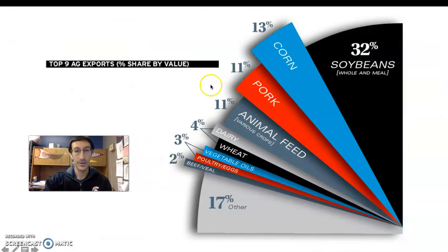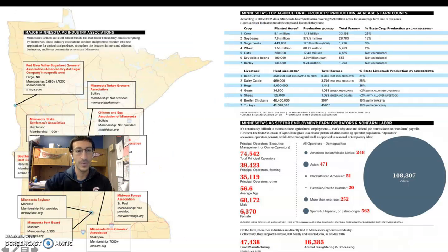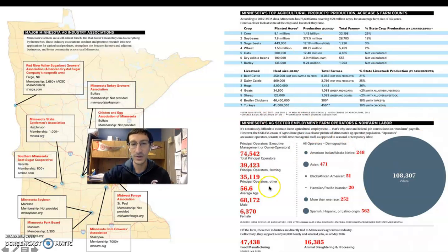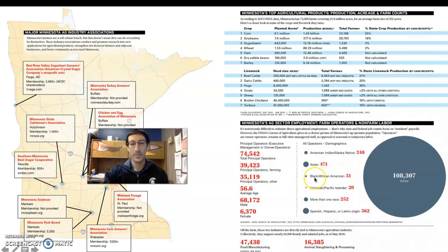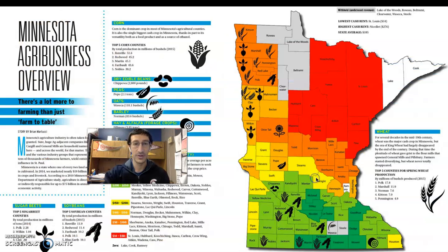Looking at the value of our top agricultural products here in Minnesota: corn is a really big one, and soybeans are the biggest — you can use soybeans for many things. You can see the rest of that information including how many people are employed in agriculture. It's a very large part of Minnesota's economy. The breakdown shows farm operators and non-farm labor — all the members of agribusiness. It's a lot of people and makes up a large part of our population.